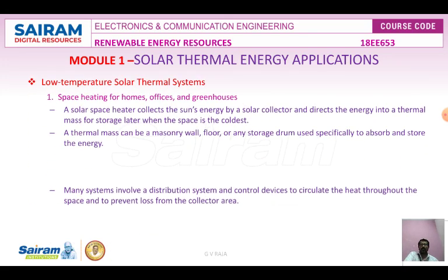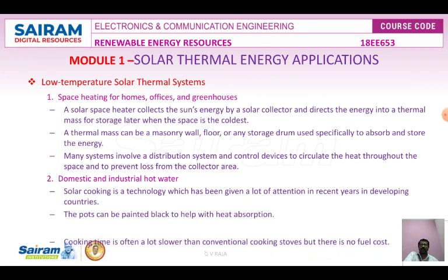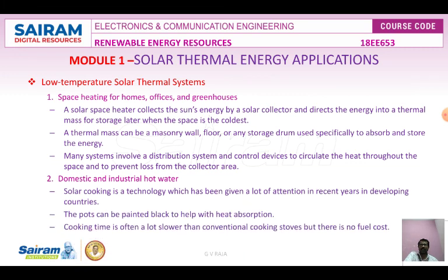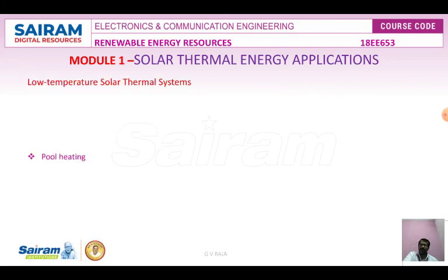Low-temperature solar thermal systems have nearly six applications: space heating, domestic and industrial hot water heating, pool heating, desalination (converting salt water into pure water), solar cooking, and crop drying. These are the main applications of solar thermal systems.